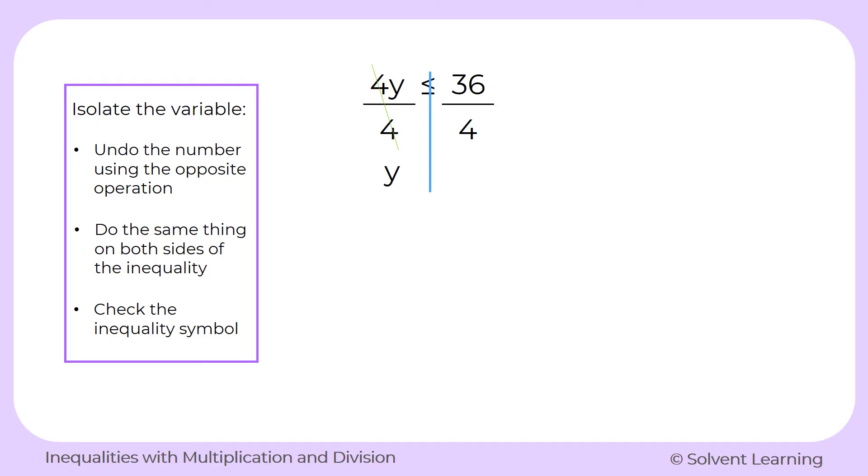So we have our variable by itself, which is what we wanted. Now on the right side, we have 36 divided by 4. That simplifies to 9. And now we just need to bring our inequality symbol down in the middle. So our solution is y is less than or equal to 9.